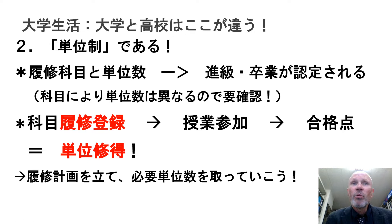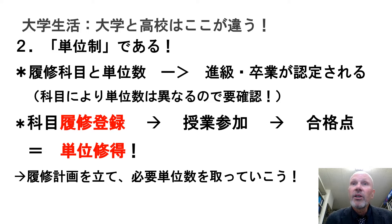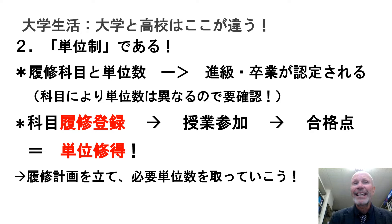What's different between universities and high schools? One big thing is the credit system — you don't really have that in high school. The idea is that you take courses in subjects and receive a credit if you pass. Eventually you graduate. But you've got to make sure you participate in classes, take part, and pass. You have to be responsible and make sure you get the credit. You should also plan the courses you take so that you get the most out of your time at university.